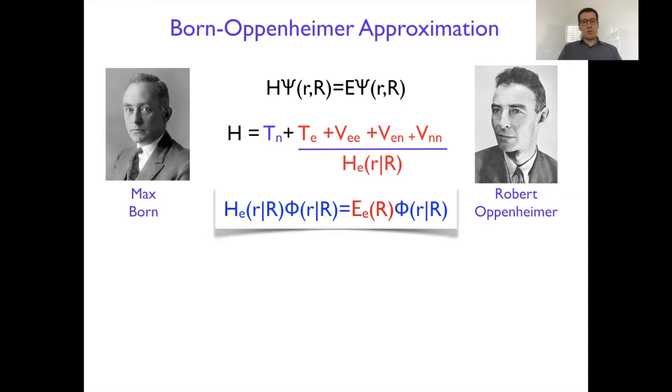Using the electronic Hamiltonian where nuclei are frozen, we can pose a different problem with the electronic function and look for the solutions where electronic function becomes the eigenstate for the electronic Hamiltonian. And that is essentially the electronic structure problem.